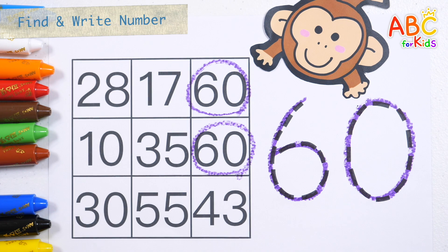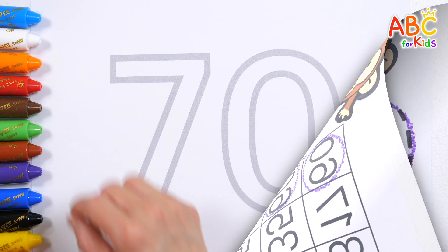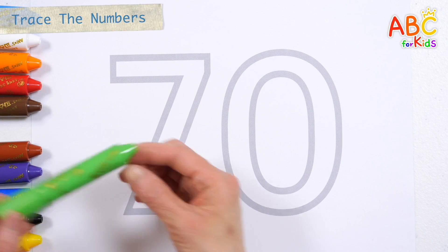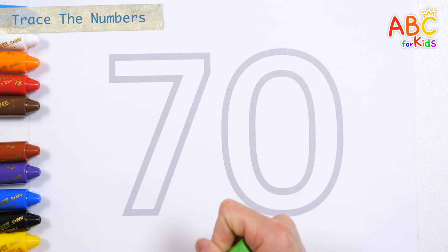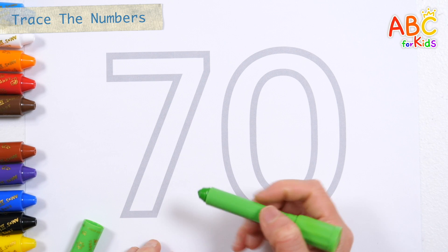60 — Good job! Let's draw the number 70 by tracing a gray line.